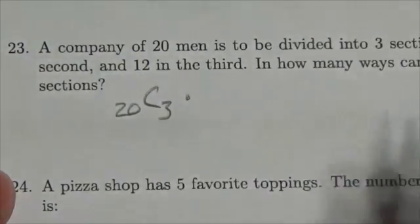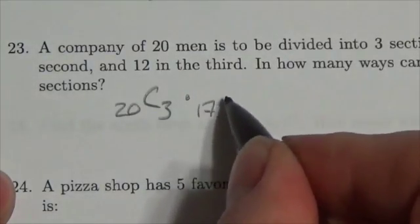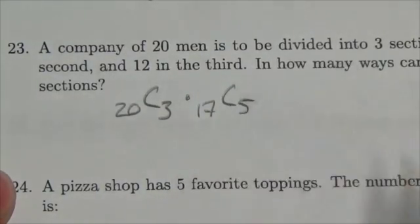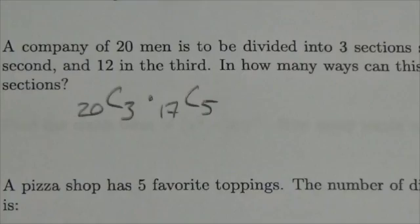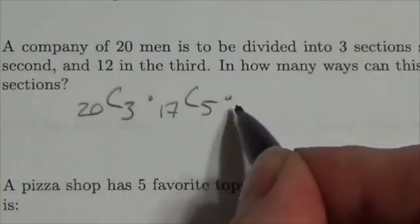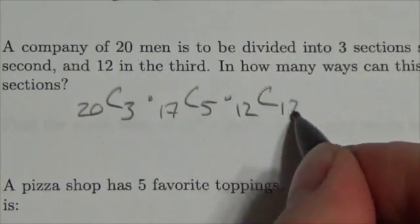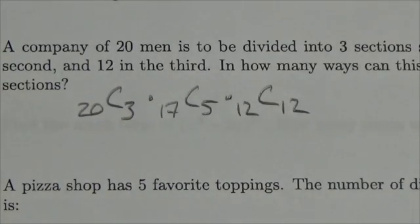Now once you've chosen that group of 3, there are 17 left over and you can choose 5 of them to go into that second group. Once you've chosen that, there's only 12 to choose from left over, and you have to choose all 12 of them to go in that last group.